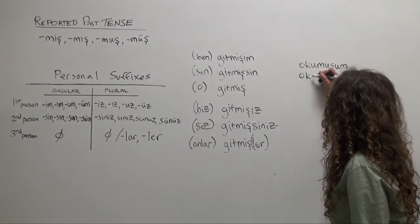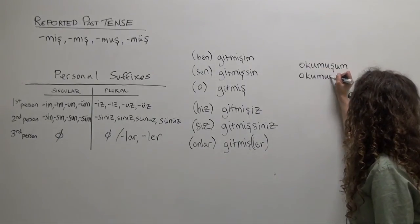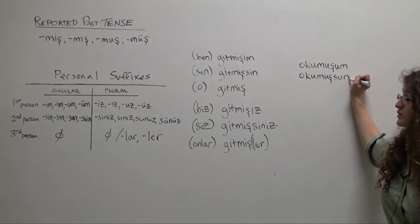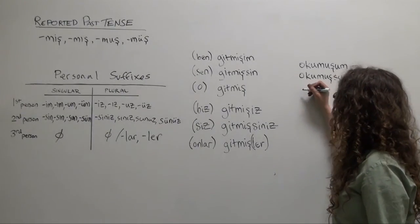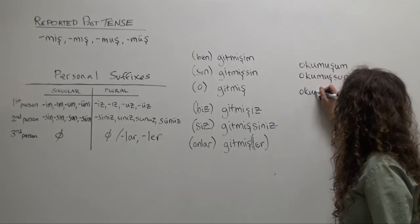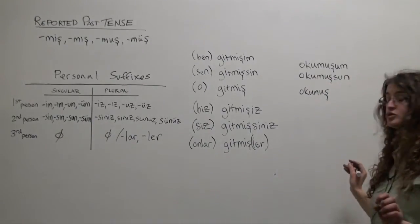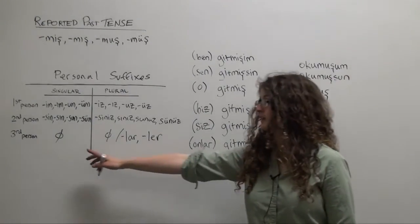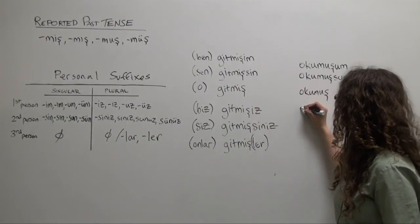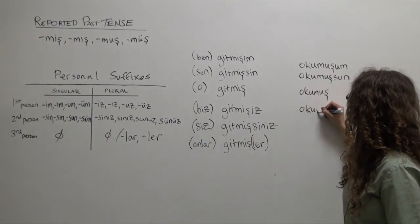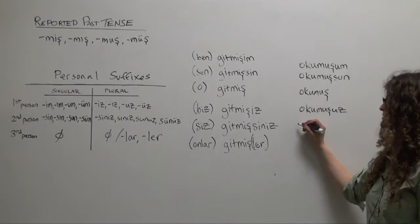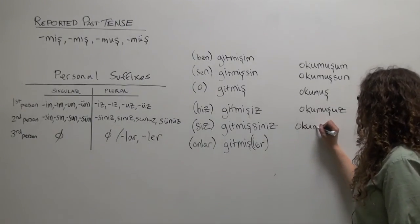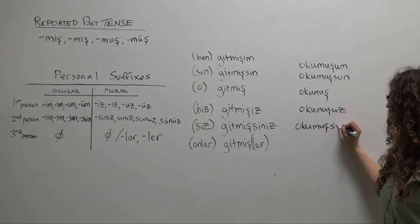Sen oku muş sun, you apparently or you reportedly read this. O okumuş. Okumuş, we can stop. Biz oku muş uz. Siz okumuşsunuz.